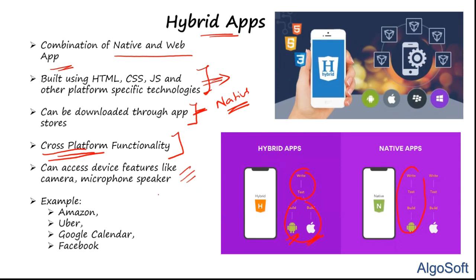Examples of hybrid apps include Amazon, Uber, Google Calendars, and Facebook. These were initially categorized as web apps but now fall under hybrid apps. Progressive Web Apps (PWAs) are an even more advanced version of hybrid apps.